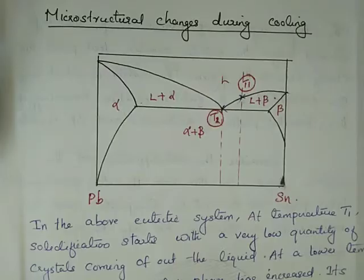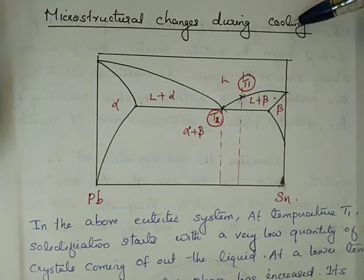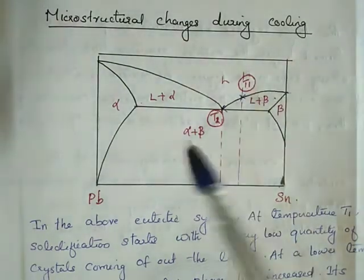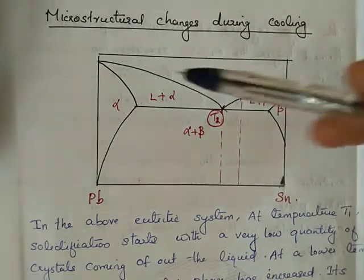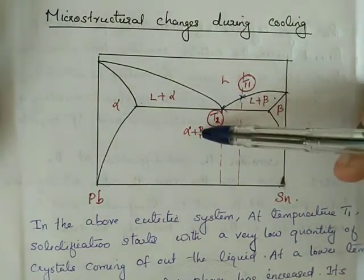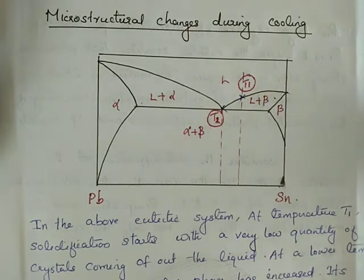Our next topic is microstructural changes during cooling. We already have different phases and corresponding microstructures as seen in the eutectic phase diagram. The same Ag-Pt peritectic phase diagram is used. The regions are marked as alpha, L plus alpha, alpha plus beta, L plus beta, and beta.